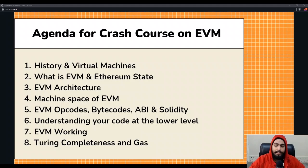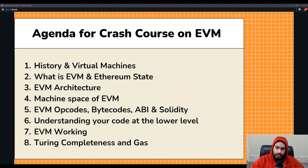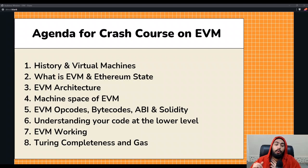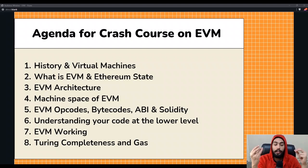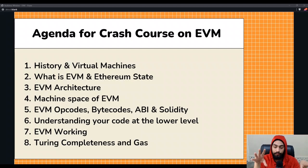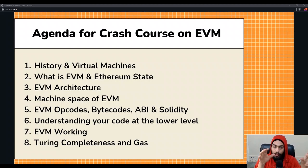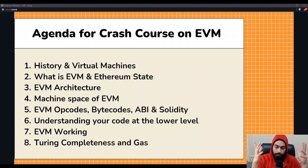We will also talk about machine spaces — the EVM can access and store information in multiple places, around five to six. Then we will discuss EVM opcodes, bytecodes, ABI, and Solidity at an overview level, because the machine cannot understand Solidity directly since it is a high-level language. That's why we need opcodes and bytecodes — these are essential to understand.